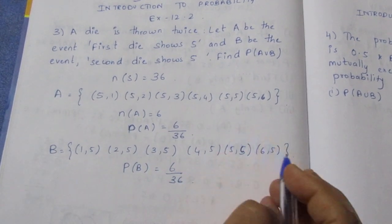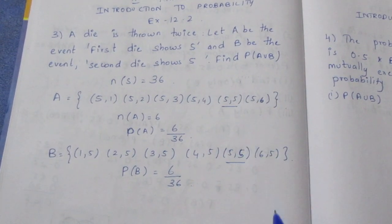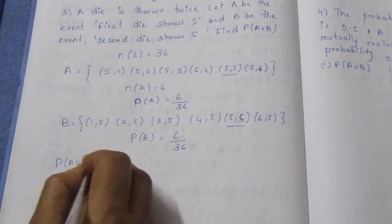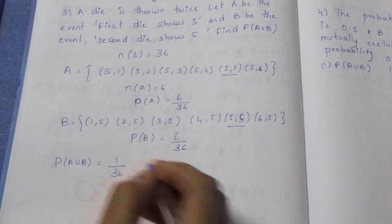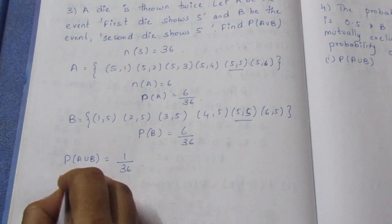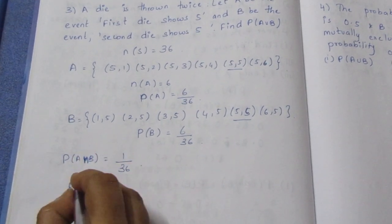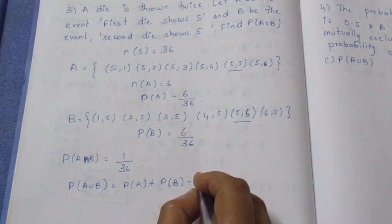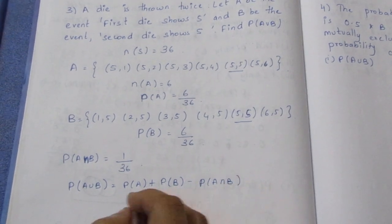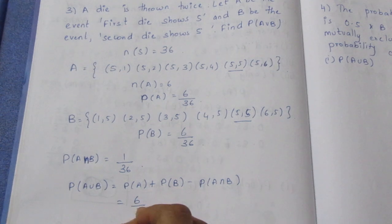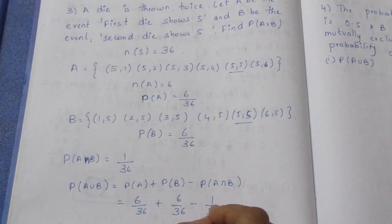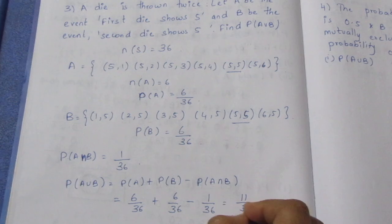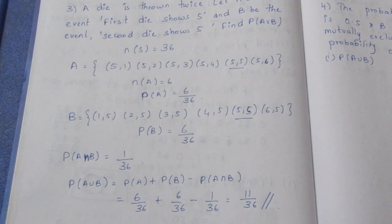For A intersection B, there is one common outcome: 5,5. So P of A intersection B is 1 by 36. Using the formula P of A union B equals P of A plus P of B minus P of A intersection B: 6 by 36 plus 6 by 36 minus 1 by 36 equals 11 by 36. That is the final answer. Thank you.